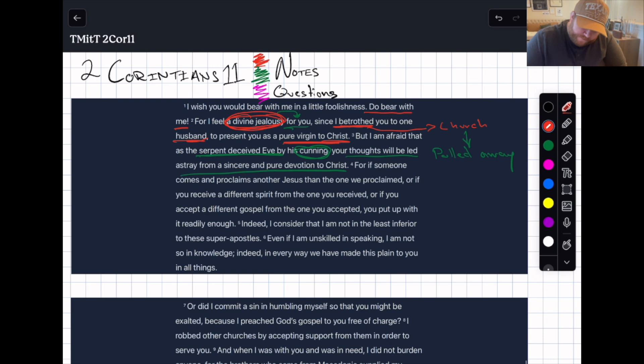Let's look at the things he says. First, if someone comes and proclaims another Jesus, that's one. Then the one we proclaimed, or if you receive a different spirit from the one you receive, that's two. Or if you accept a different gospel, three. So he looks at these three things.